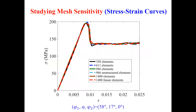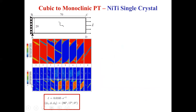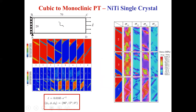We solve various problems. This is cubic-to-monoclinic phase transformation in nickel-titanium crystal under simple tension. Blue is martensite. You see direct phase transition and reverse phase transition with corresponding stress-strain curves. For each state, we have distribution of all 12 variants — we show only four major variants, but we have information about all variants and also all stress fields.